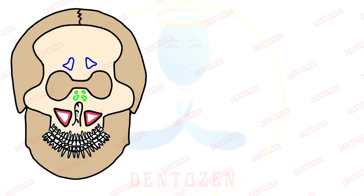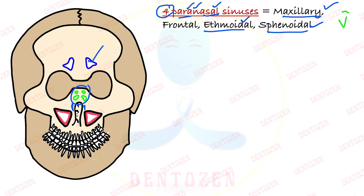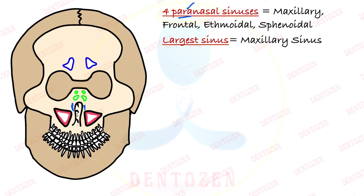It is present around the nasal cavity, so it is called a paranasal sinus. Para means around, nasal means nose. But it is not the only one — there are four paranasal sinuses: maxillary, frontal inside the frontal bone, ethmoidal inside the ethmoidal bone, and sphenoidal inside the sphenoid bone. That is your viva question. And out of these four, the largest paranasal sinus is the maxillary sinus.